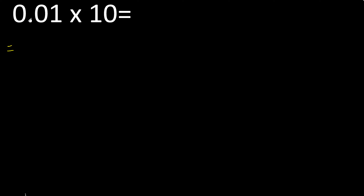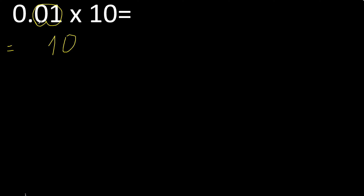Imagine there is no point. If there is no point, delete the 0. Here, 1 multiplied by 10 is 10. After the point: 1, 2 — 2 digits, therefore here 1,